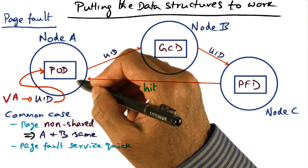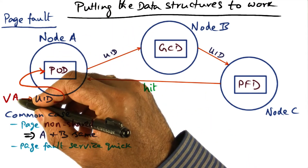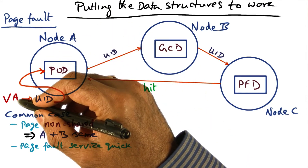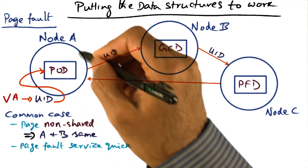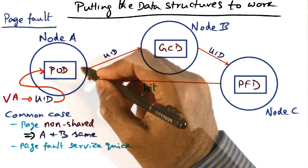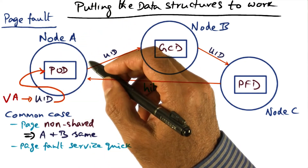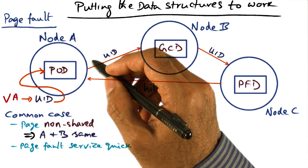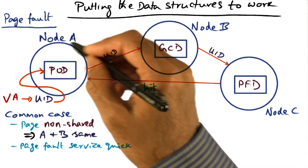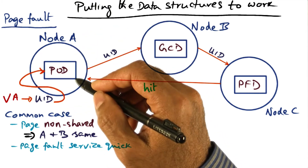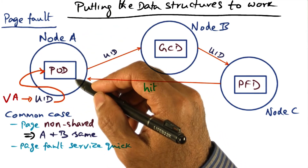Node C sends the page over to node A. Node A is happy — it can then map this virtual address into its internal structure, and the page fault service is complete. It can then resume the process that was blocked for this page fault.